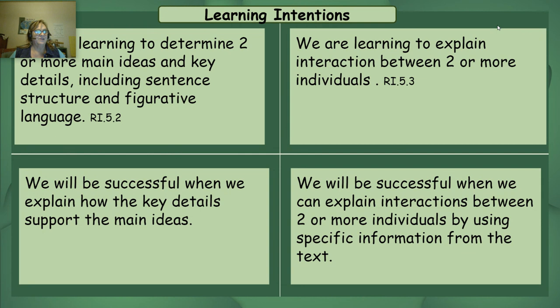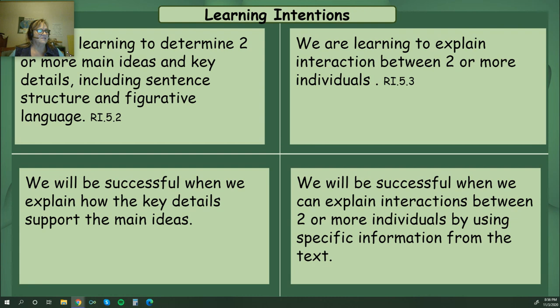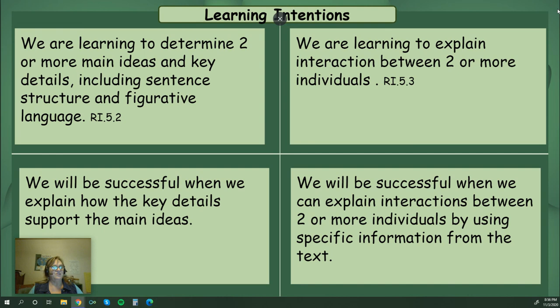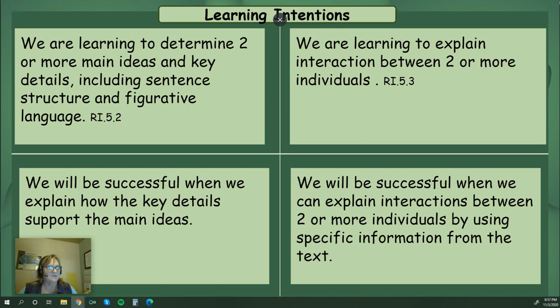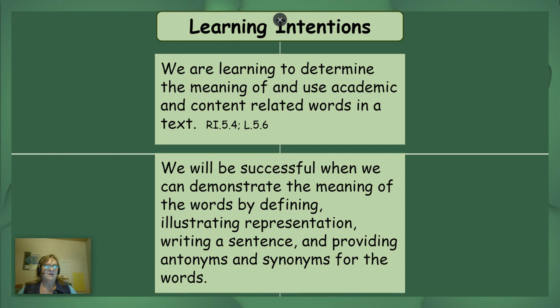Today we are learning to determine two or more main ideas and key details, including sentence structure and figurative language. We will be successful when we explain how the key details support the main ideas. We are also learning to explain interactions between two or more individuals. We will be successful when we can explain those interactions using specific information from the text.